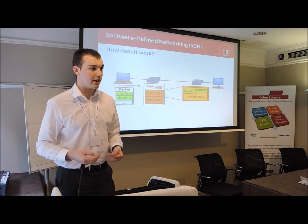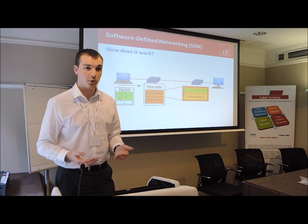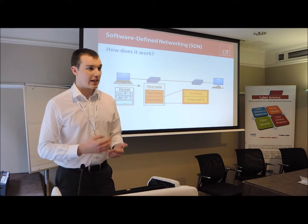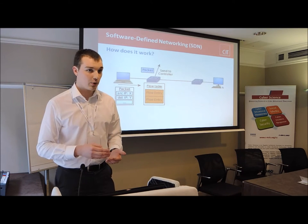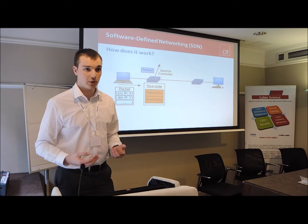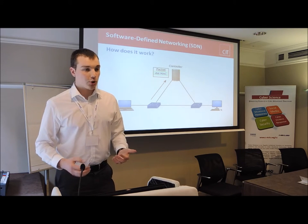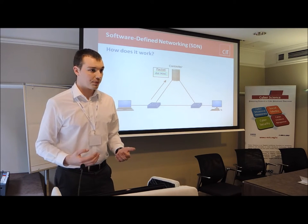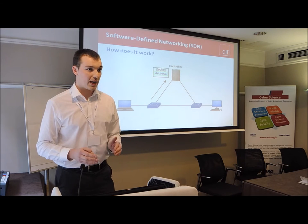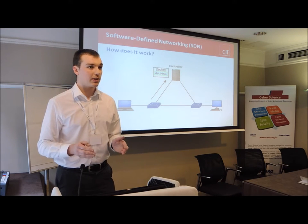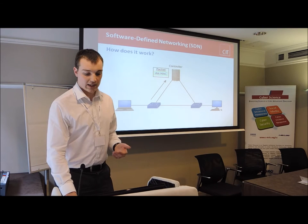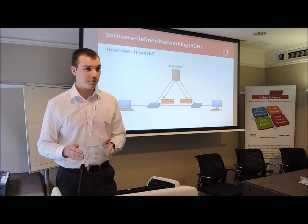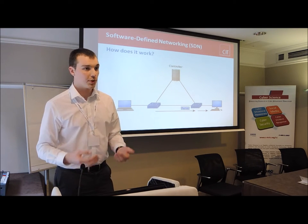If the forwarding device can successfully match a packet with a flow entry, it will then perform an action on that packet as specified in the flow entry. These actions could be something like output port one or drop. If a forwarding device receives a packet but cannot match it with an existing flow entry, it will forward that packet to the controller. The controller will make a forwarding decision, decide on a route through the network, and install flow entries on each forwarding device along that route to allow the packet to traverse the network.